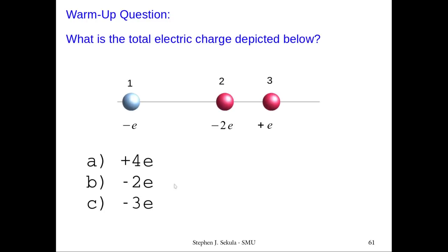If you identified that negative E plus negative 2E equals negative 3E, plus positive E brings us back to negative 2E — identifying negative 2E as the correct answer — then excellent job. If this was not the answer you got, it's a good opportunity to pause and make up your own example and see if you can arrive at an answer that makes sense.